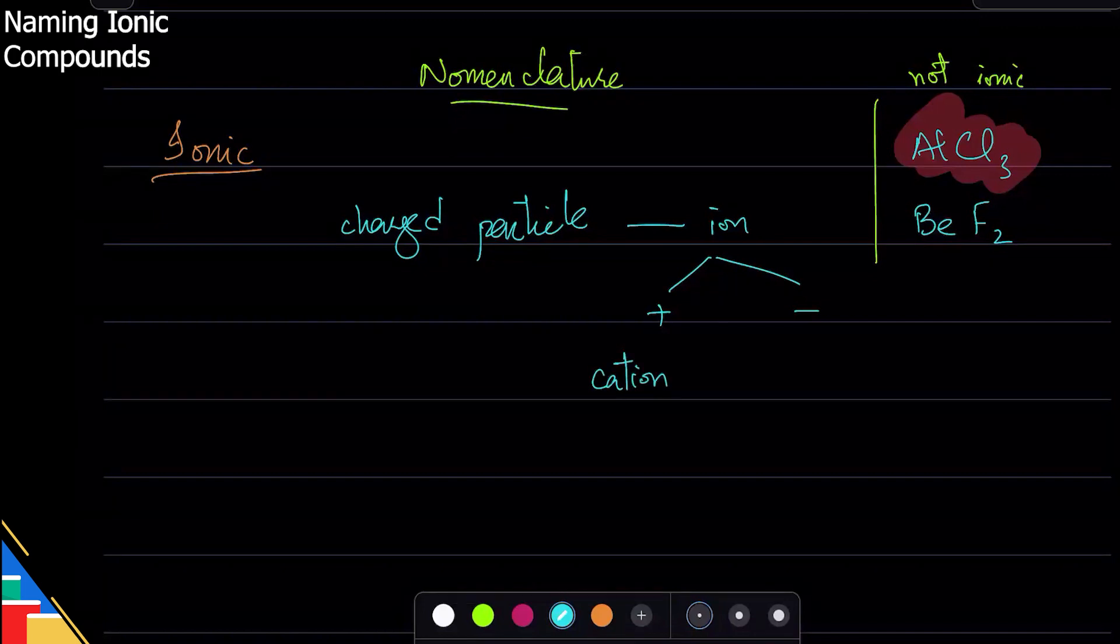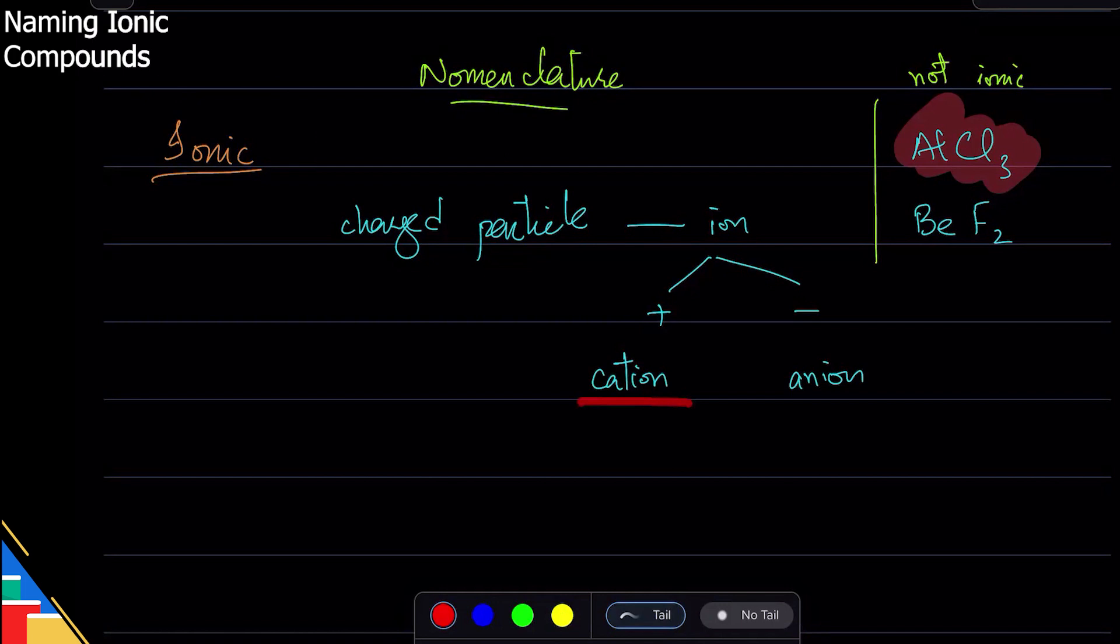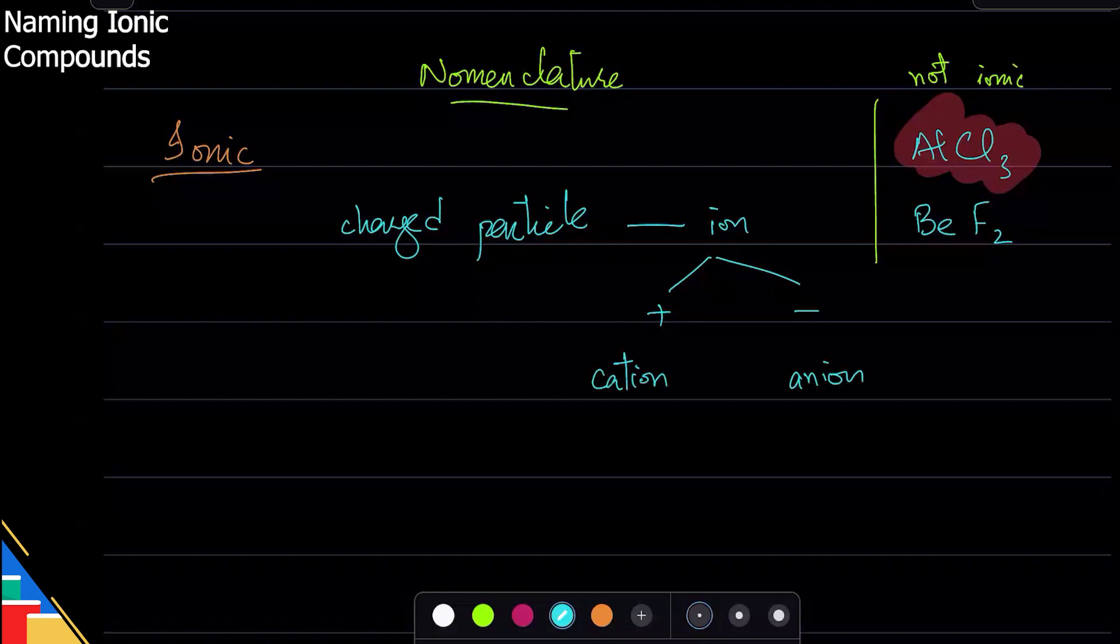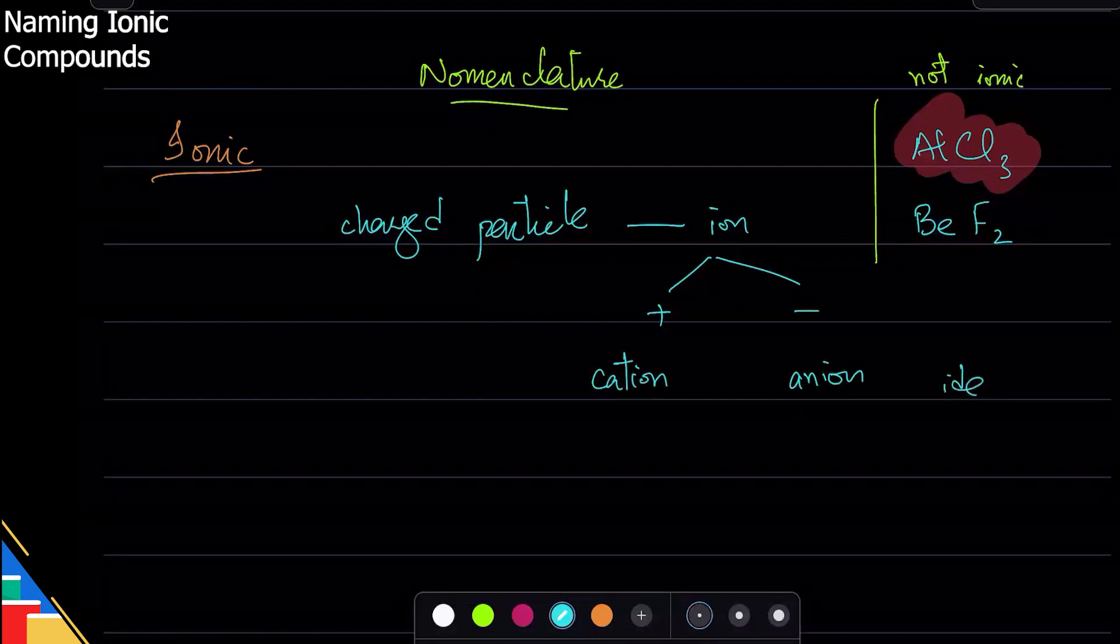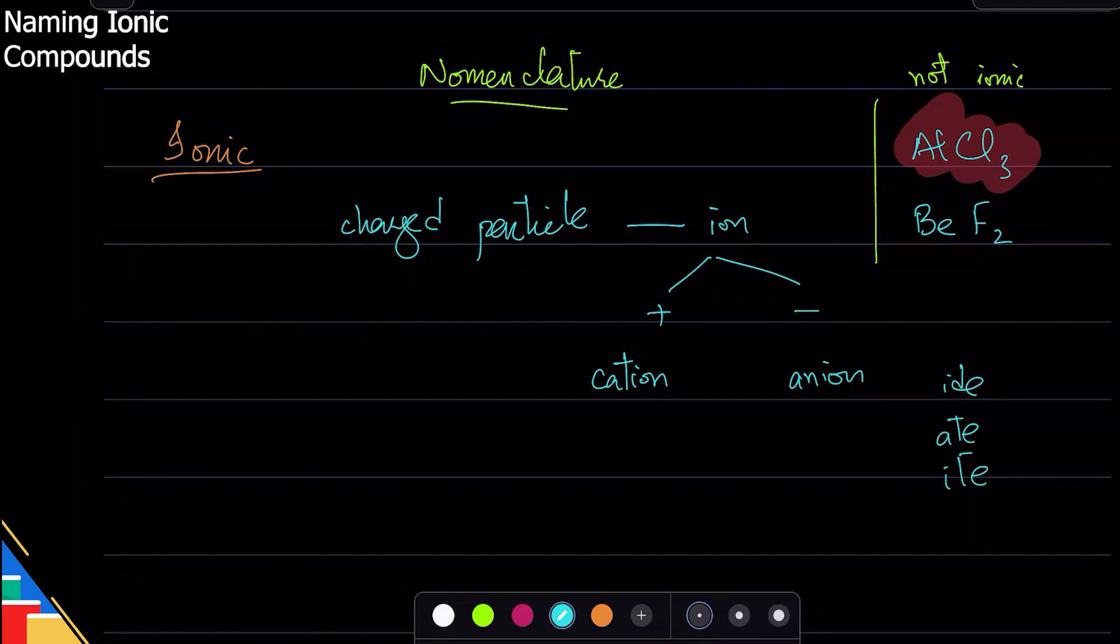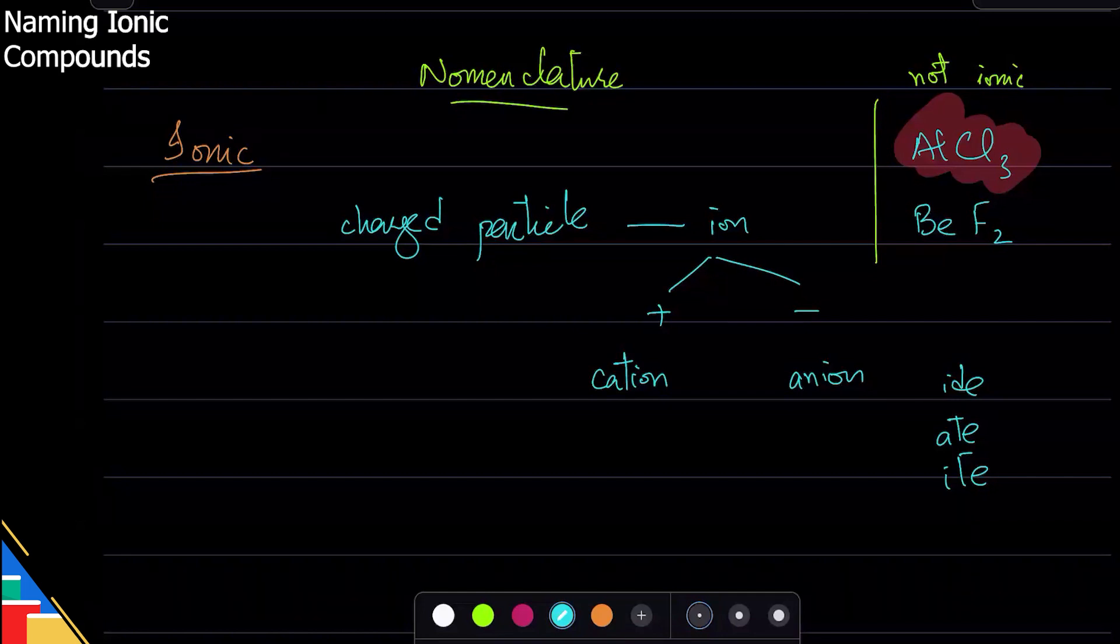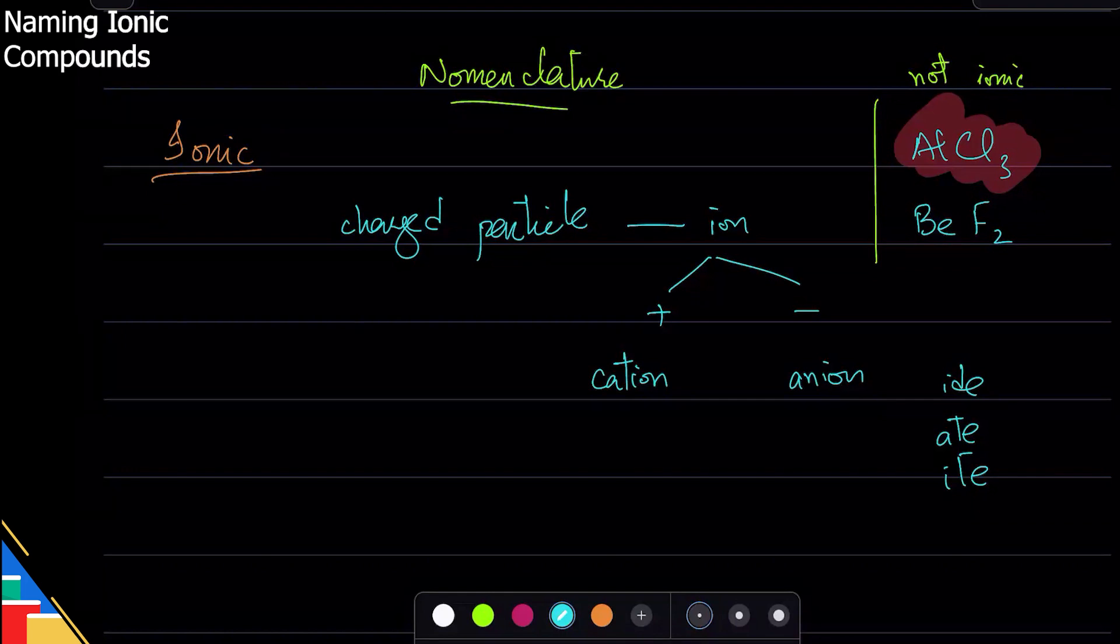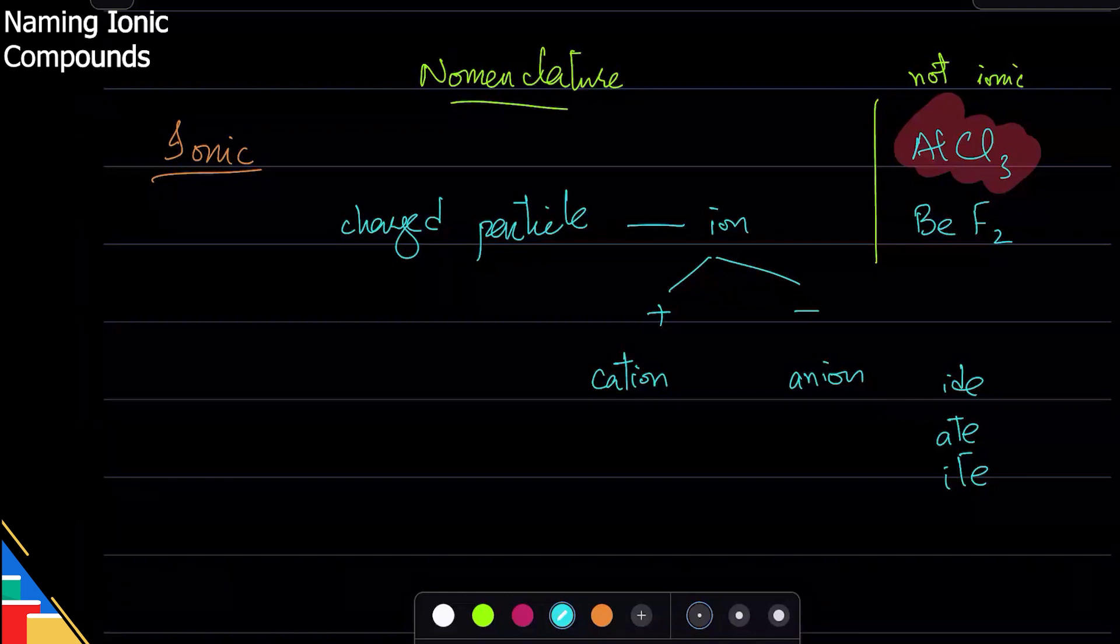Anions, anions yes, absolutely. So for ionic things we will name the cation and then the anion, and sometimes we will add -ide or -ate or -ite, something like this at the end of the name. So that's how the name goes: you name the cation, you name the anion, and maybe you add -ide, -ate, or -ite at the end of the name. There's many other things that we add, but again we're restricting ourselves to IGCSE level syllabus.